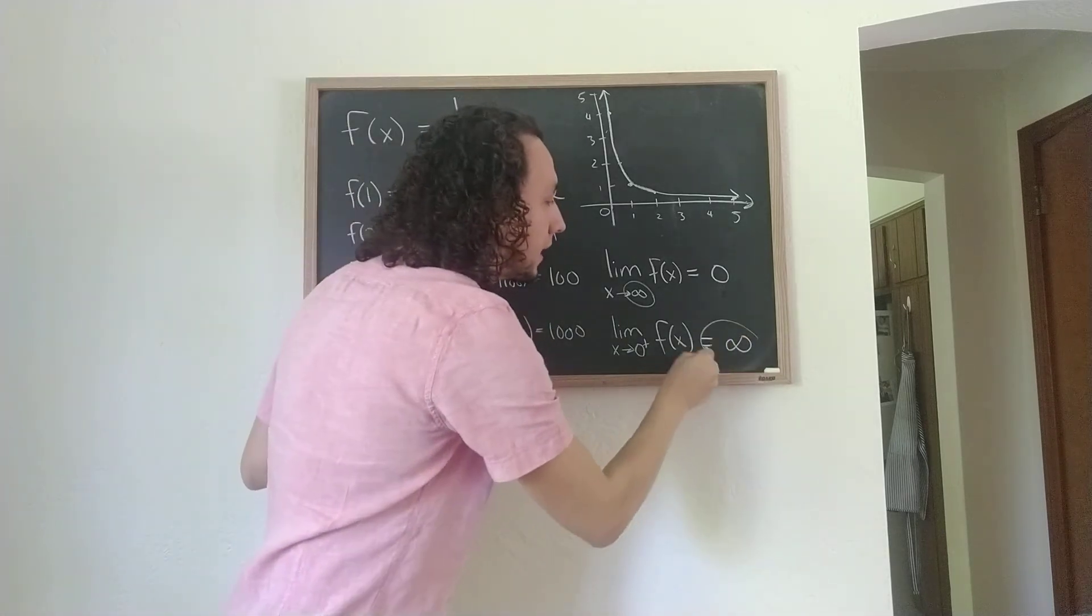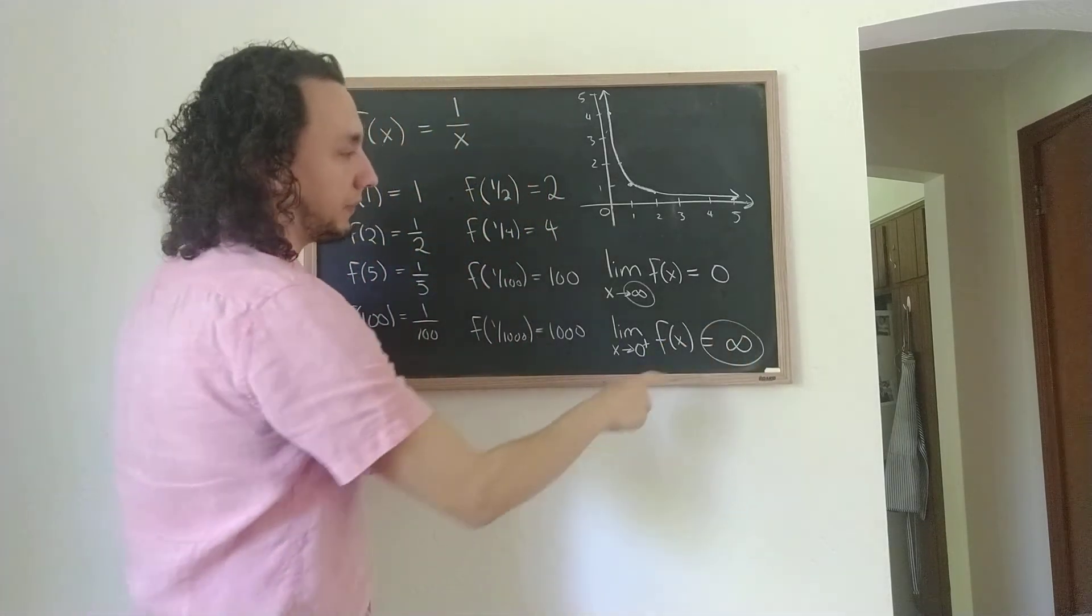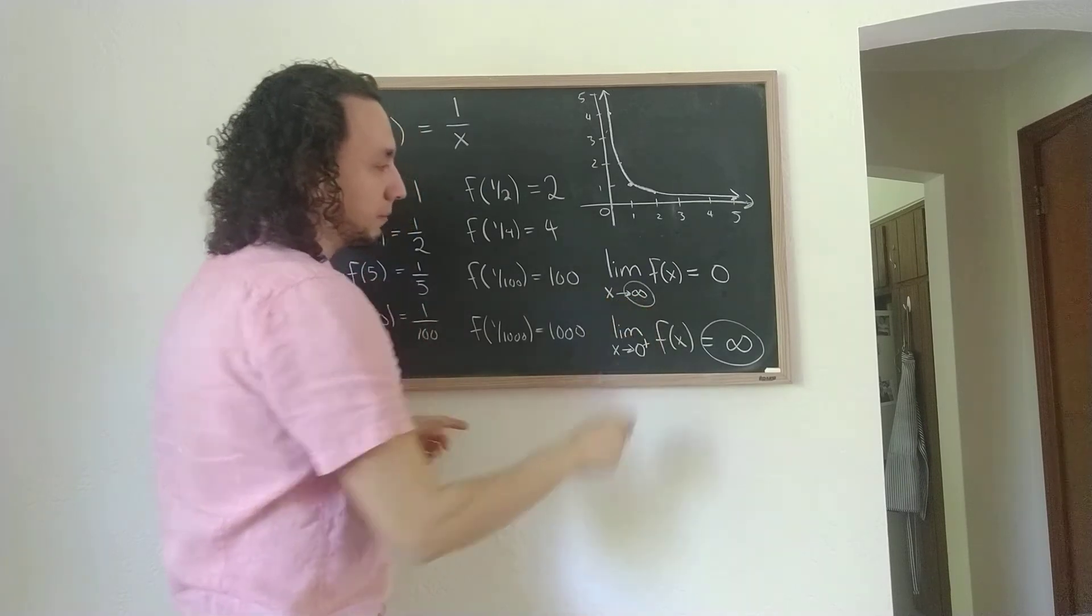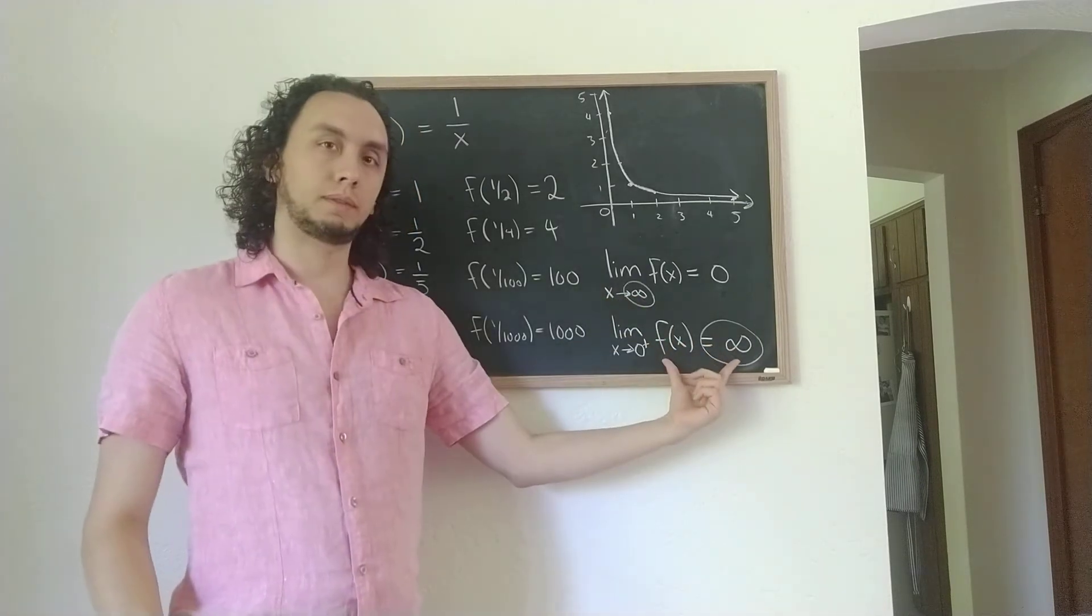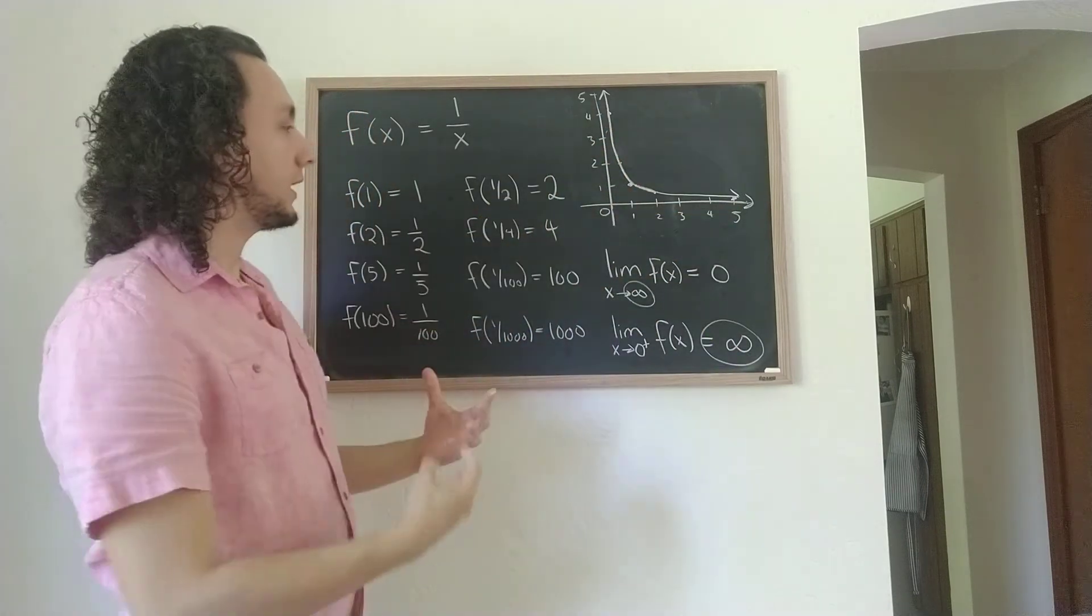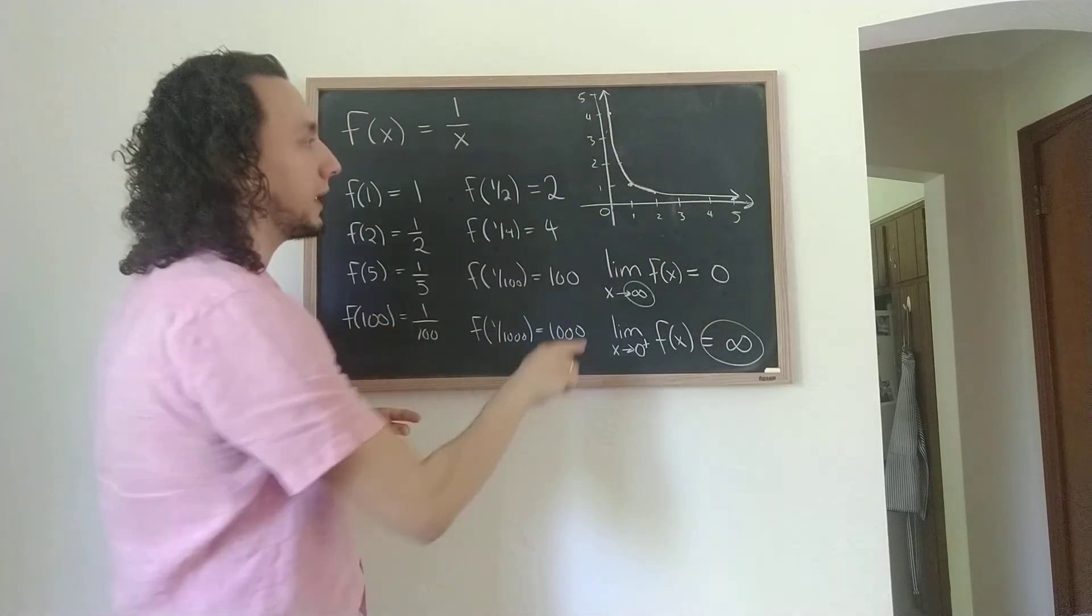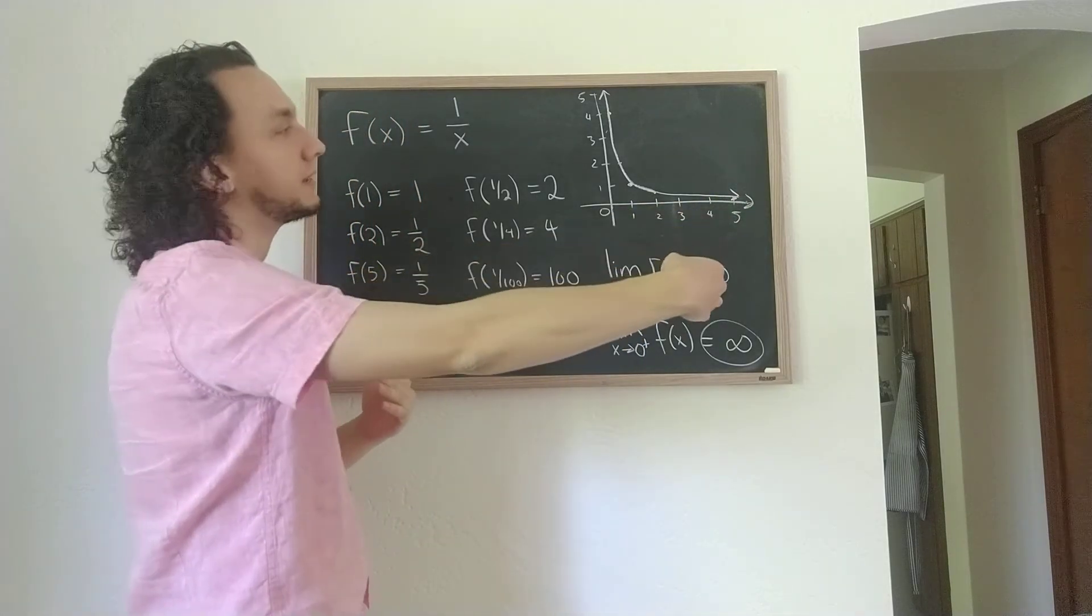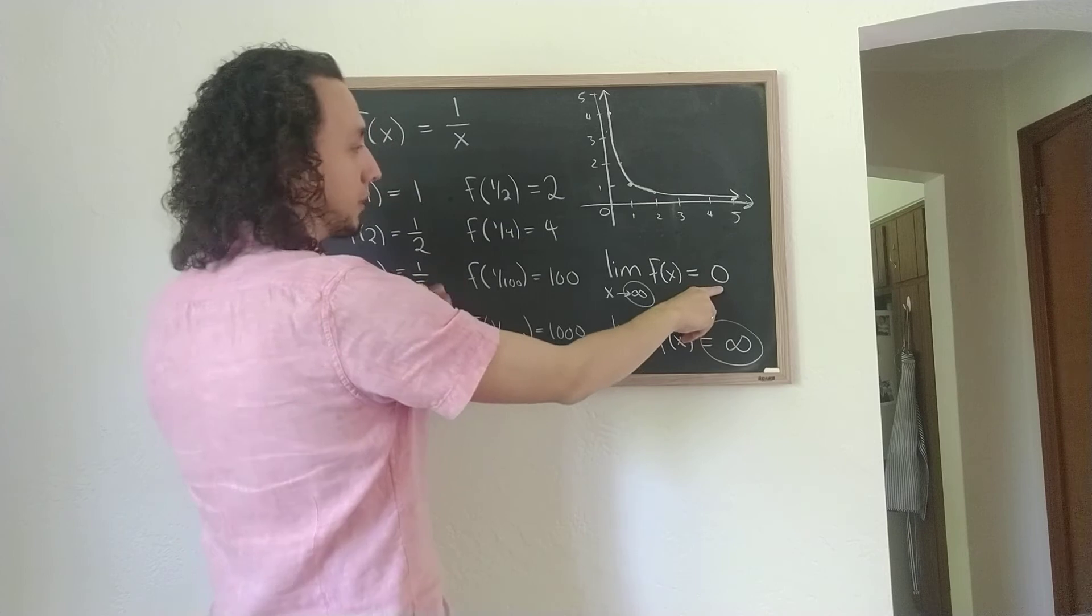And so what we say is that the limit as x goes to 0 from the right of f of x is infinity. And we see infinity cropping up for a second time, this time not as the limit of the input, but as the limit of the output.